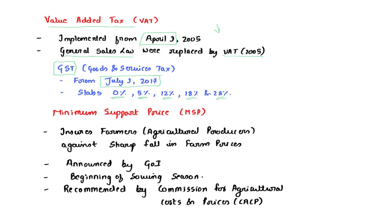Minimum Support Price, or MSP, protects farmers — that is, agricultural producers — against a sharp fall in farm prices. It is announced by the Government of India at the beginning of every sowing season. The prices announced are recommended by the Commission for Agricultural Costs and Prices, known as CACP.